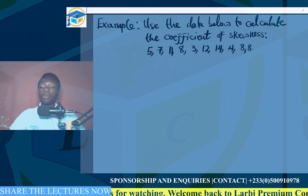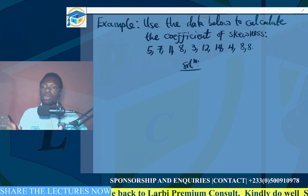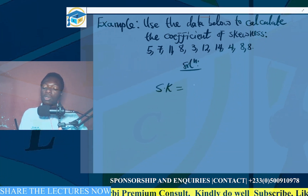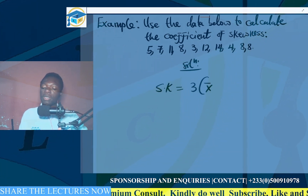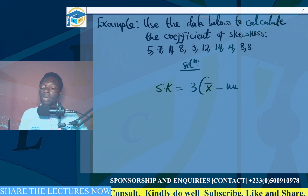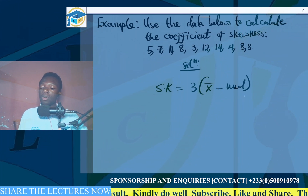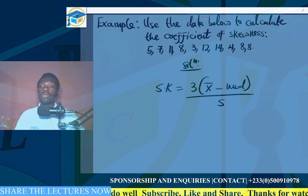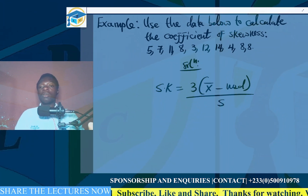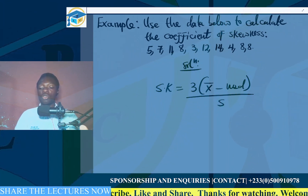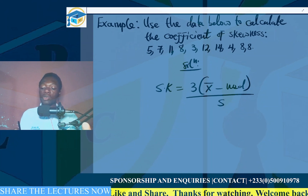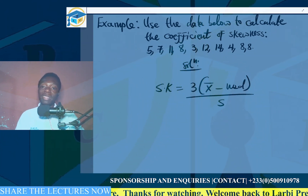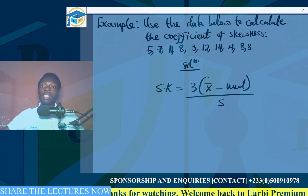What is the formula for calculating the coefficient of skewness? We know that the coefficient of skewness Xk equals 3 multiplied by (x-bar minus the median), divided by the standard deviation. If you are not told which formula to use, you must go with this second formula: 3 times (x-bar minus median), divided by the standard deviation.